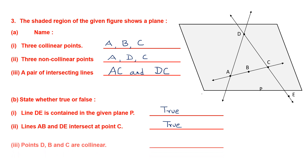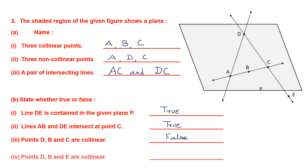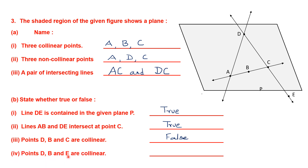Next one. Points D, B, and C are collinear. D is here, B is here, C is here. As you can see, these three points are not on the same straight line, so they are not collinear — this statement is false. Next: points D, B, and E are collinear. Looking for points D, B, and E — they are not lying on the same straight line either. So this statement is also false.